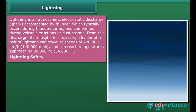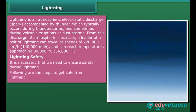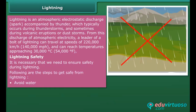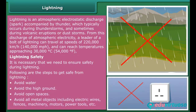It is necessary to ensure safety during lightning. Steps to stay safe include: avoid water, avoid high ground, avoid open spaces, and avoid all metal objects including electric wires, fences, machinery, motors, and power tools.